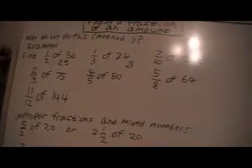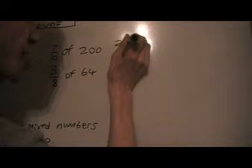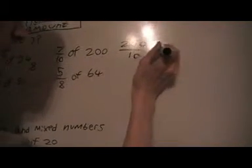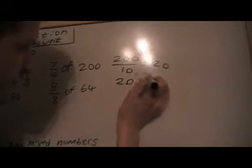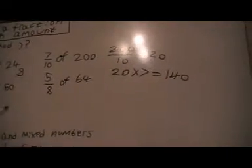Seven tenths of 200. I divide 200 by 10 and I get 20. And then I do 20 times 7 and get 140. That's the answer for that one.